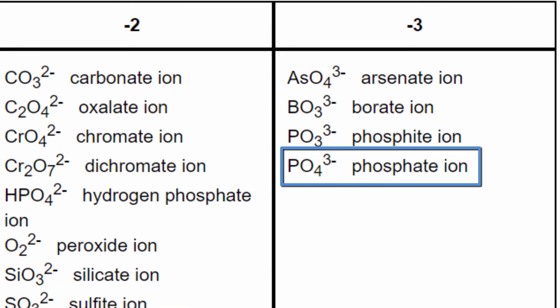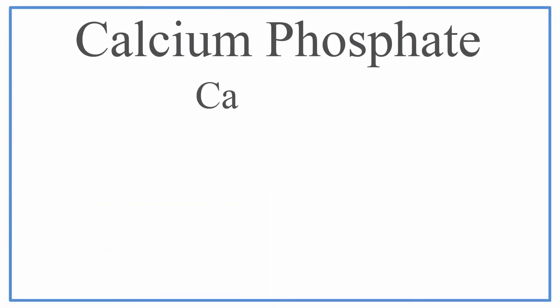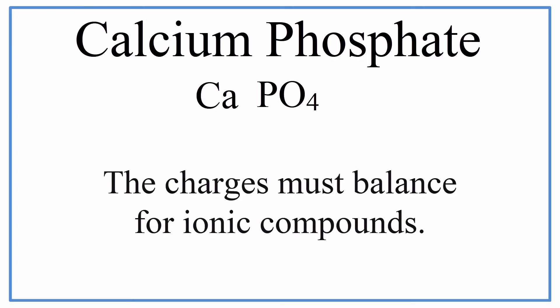We'll worry about the three minus later. For now, we know that the phosphate ion has a formula of PO4. So we have our calcium and we'll add the PO4 to make a skeleton formula for calcium phosphate. But remember that minus three on the PO4, we've got to deal with that because when we have ionic compounds, we have to balance the charges on each of the ions.